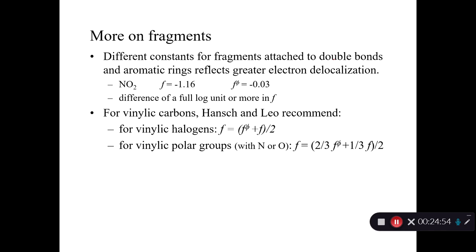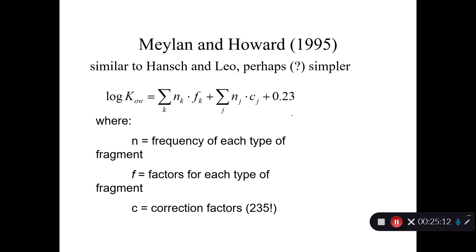You have different fragment constants depending on whether you're attached to a double bond or an aromatic ring. Mayland and Howard came out with a simpler, updated approach in 1995. Log KOW equals the sum of all fragment constants plus the sum of all correction factors, and for some inexplicable reason there's an intercept of 0.23. And notice — 235 correction factors. It's crazy.